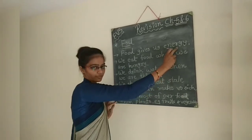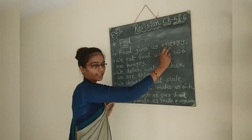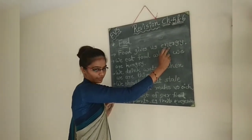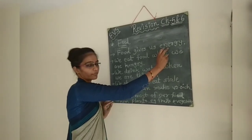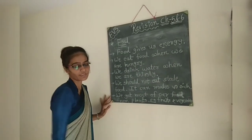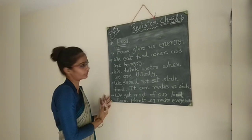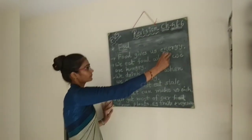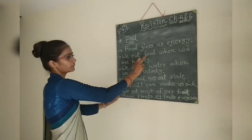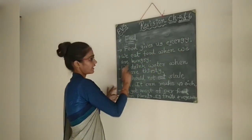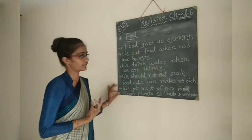Energy means the power to do any action. From food we get energy. We need to eat different kinds of food to get energy — for example, to talk, to play. Number 2: We eat food when we are hungry. Hungry means we strongly feel that we need to eat some food.